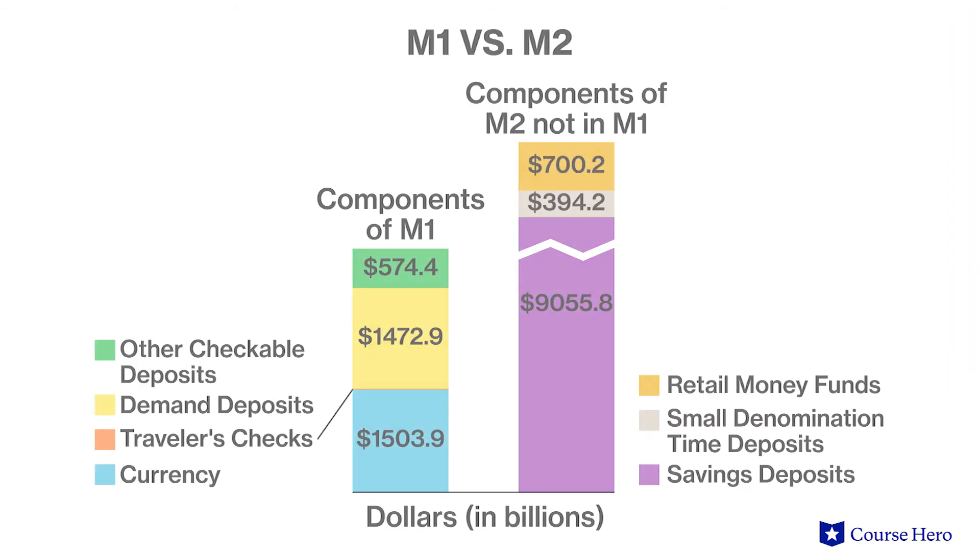These accounts are less liquid than the assets in M1, but can still be used relatively easily if needed. All an individual has to do is transfer her savings deposits to her checking deposit or withdraw funds using an ATM to make a purchase. However, an individual cannot use her savings account directly to purchase something in a store without taking those additional steps to move the money into a more liquid form.